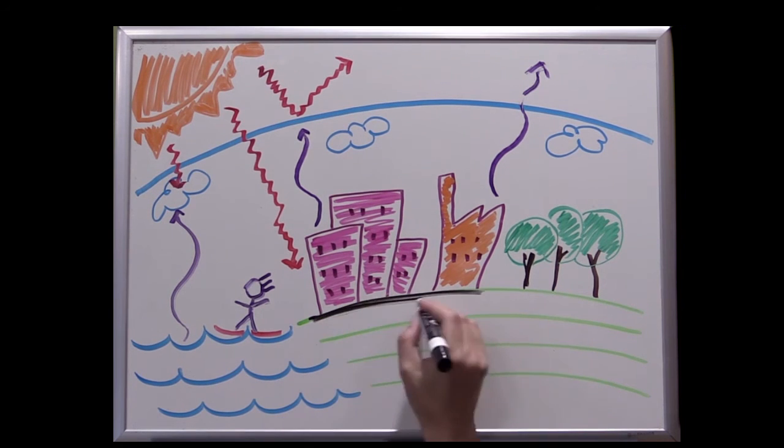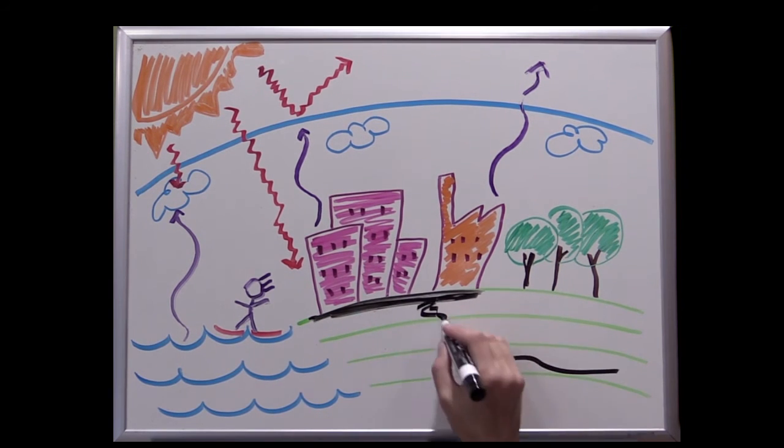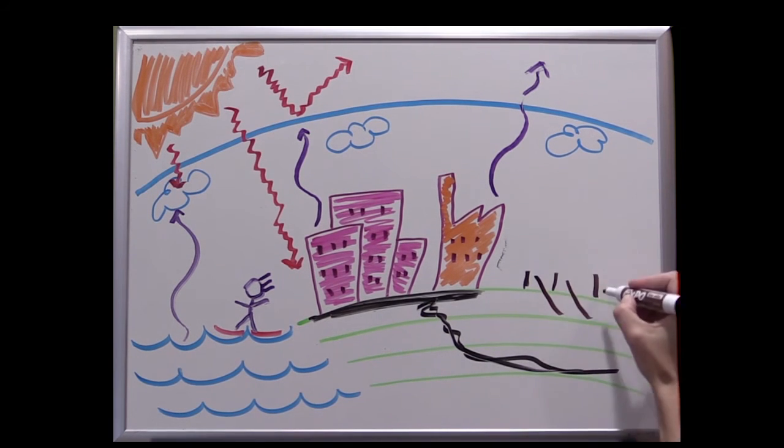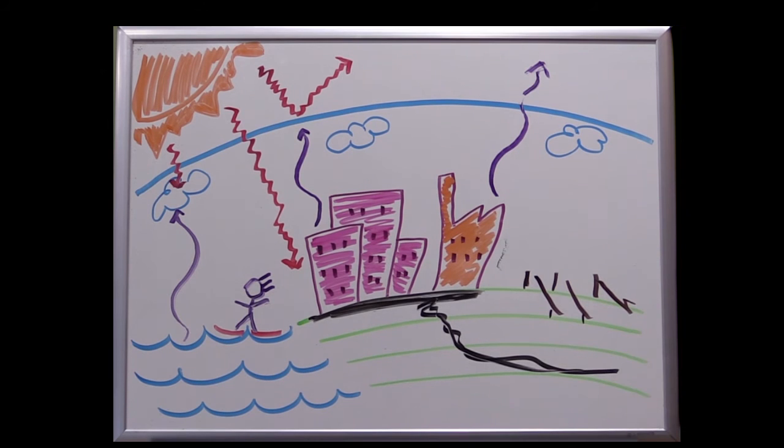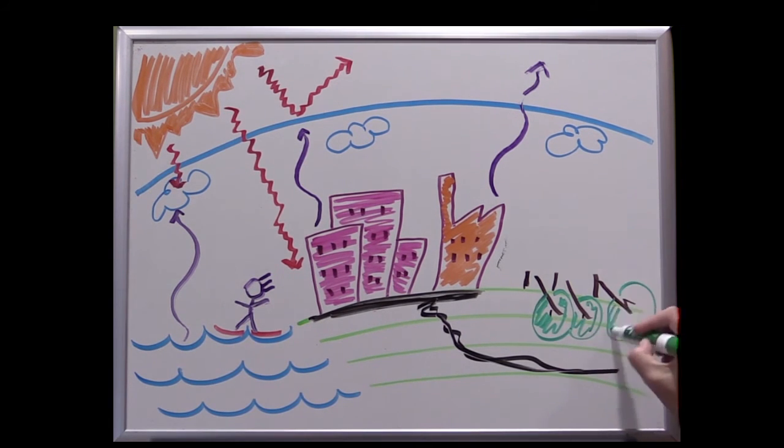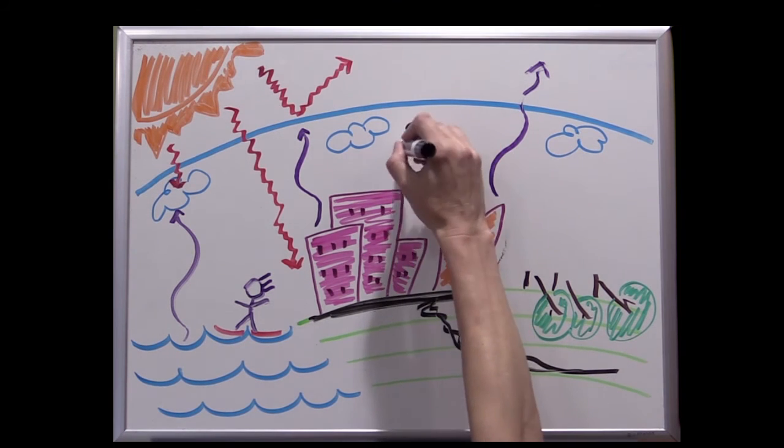The problem arises, though, when the balance of greenhouse gas molecules in our atmosphere is altered. Human activities like fossil fuel combustion and deforestation upset this balance by increasing the amount of these heat-trapping gases. And the more of those gases there are in the atmosphere, the more opportunity they have to warm things up. This is where the concerns about climate change begin.